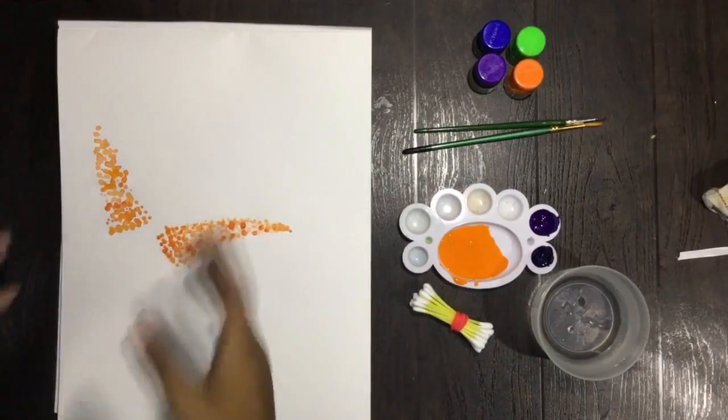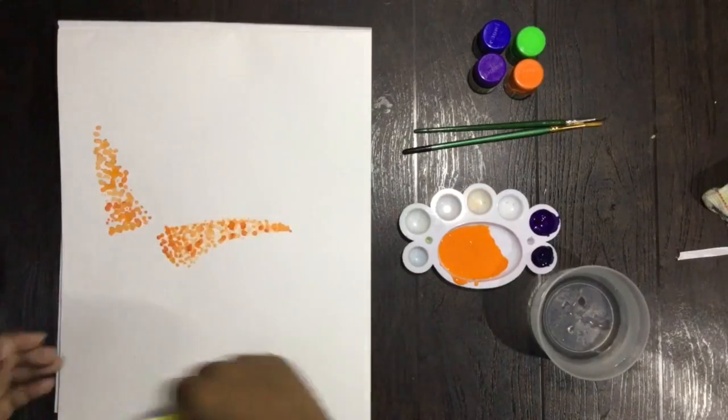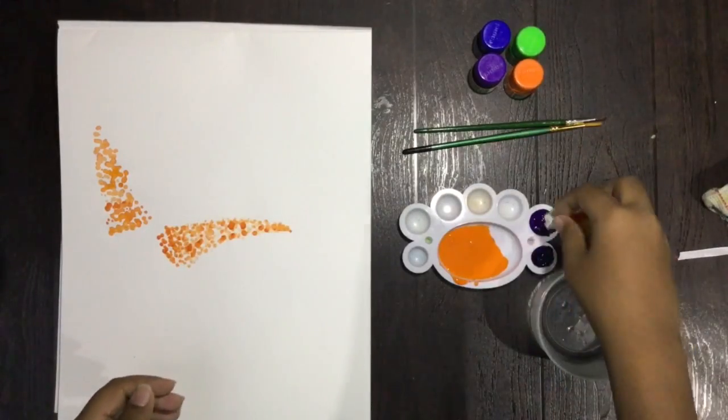So guys, as you can see, I made two of them. So let's take the smaller one and I'll just dip it inside the violet.